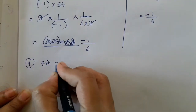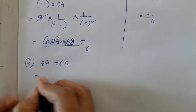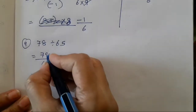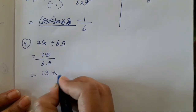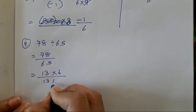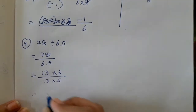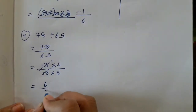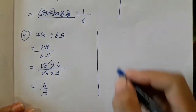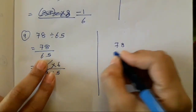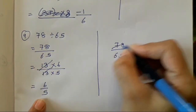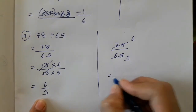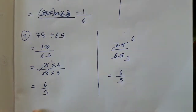The ninth sum is 78 divided with 65. So 78 upon 65. 78 comes in the table of 13 — 13 sixes are, and 13 fives are. So again 13 will get reduced — 6 upon 5. Or after writing this step — 13 sixes are, 13 fives are. So again 6 upon 5.